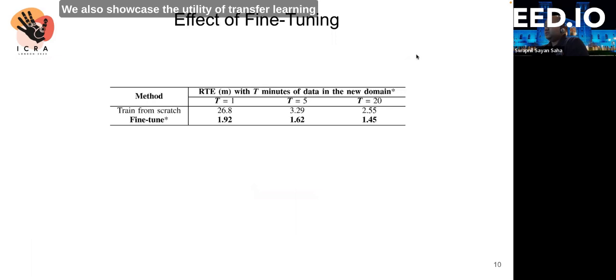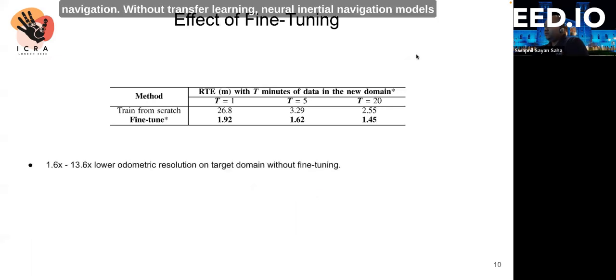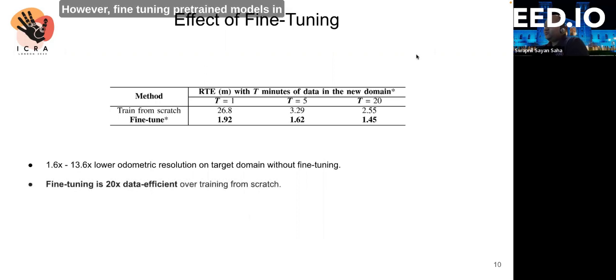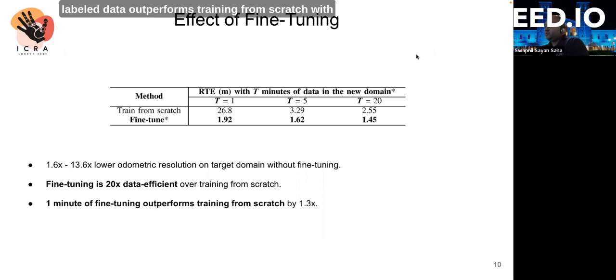We also showcase the utility of transfer learning in reducing the data-hungry nature of neural inertial navigation. Without transfer learning, neural inertial navigation models trained on one dataset are not directly transferable to another dataset. This results in 1.6 to 13.6x lower odometric resolution compared to fine-tuning. However, fine-tuning pre-trained odometry models in the target domain requires 20x less data than training a model from scratch. In fact, fine-tuning with 1 minute of labeled data outperforms training from scratch with 20 minutes of data by 1.3x.